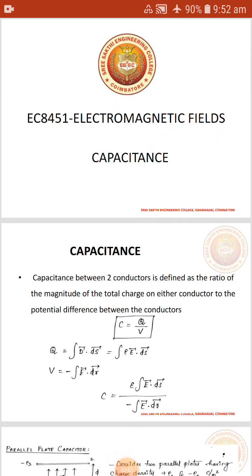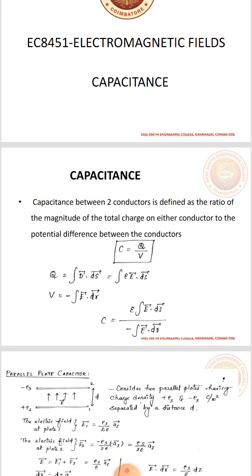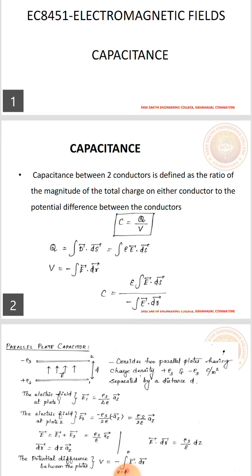We are going to see the topic of capacitance. The capacitance between two conductors is defined as the ratio of total charge to the potential difference between the conductors. Mathematically, C is equal to Q by V.